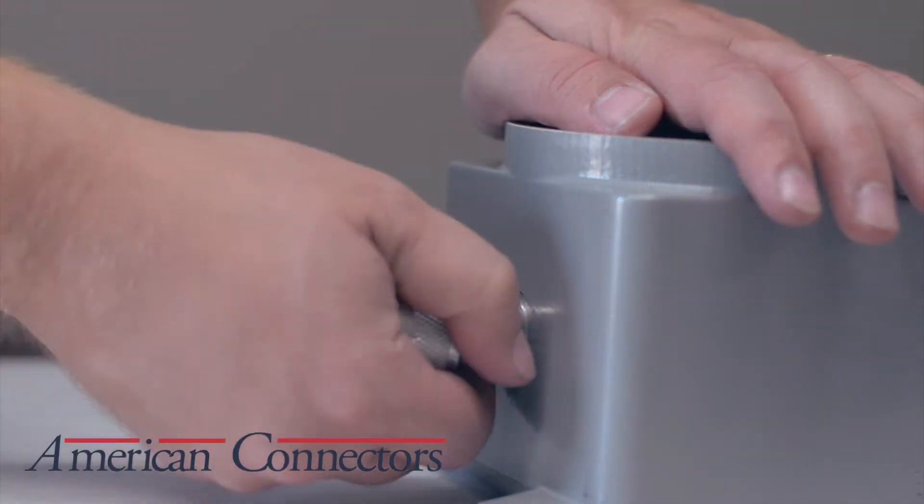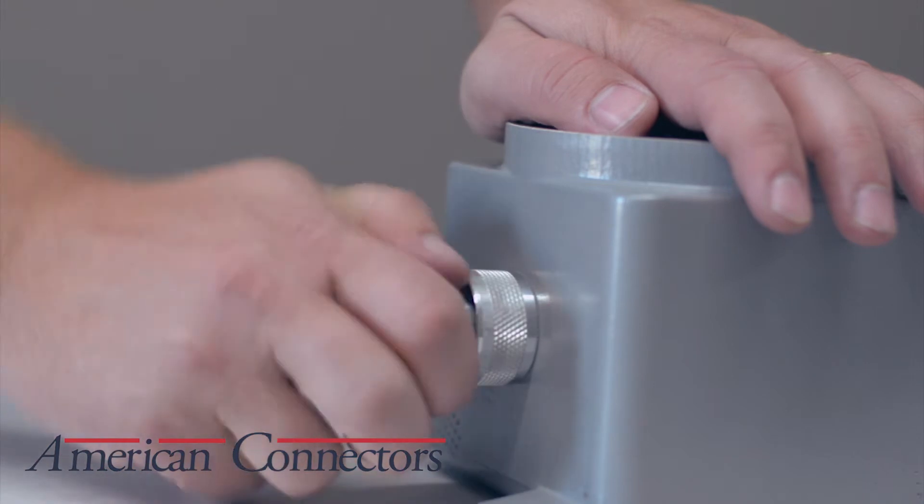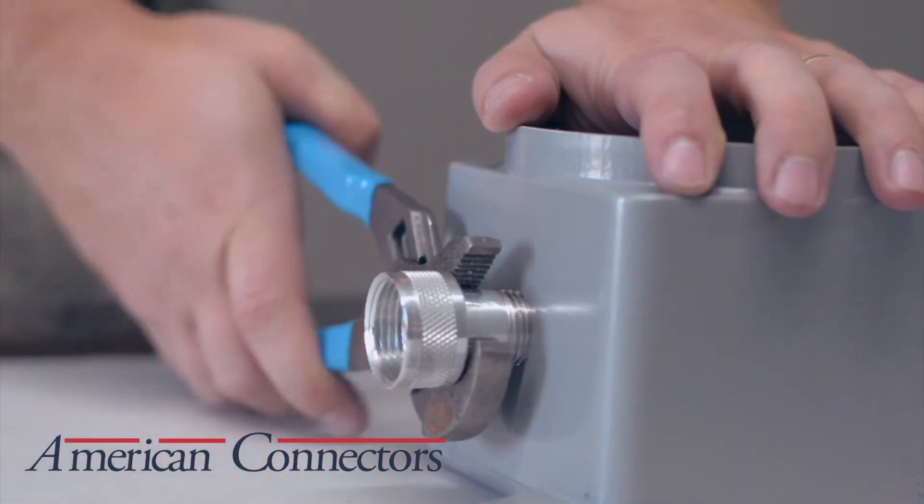Thread the hub into the box by hand, then tighten with pliers.